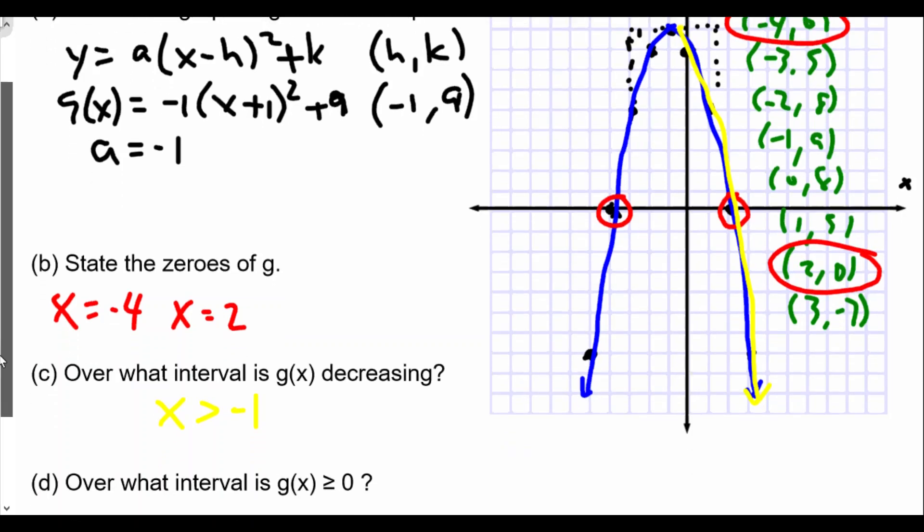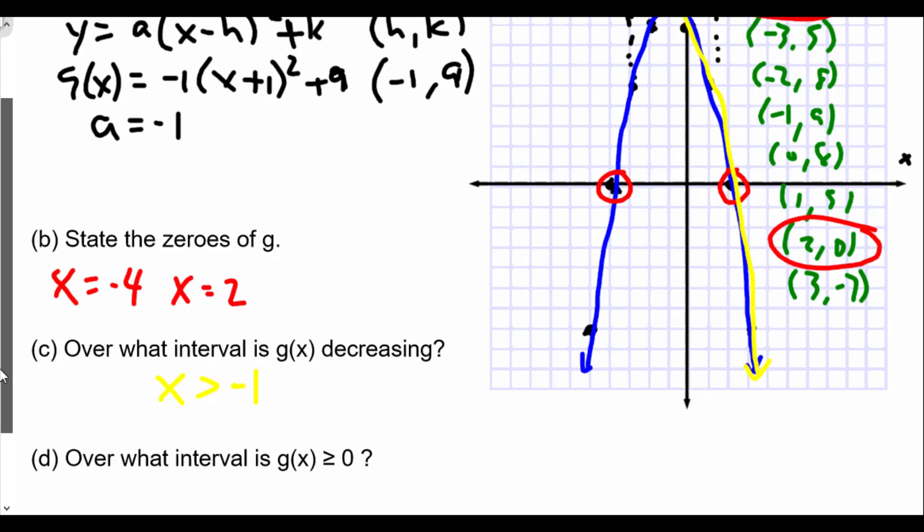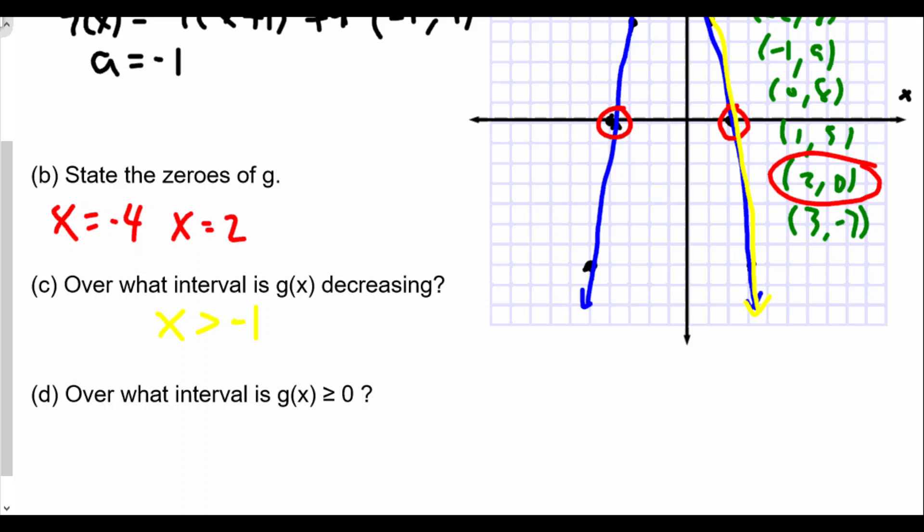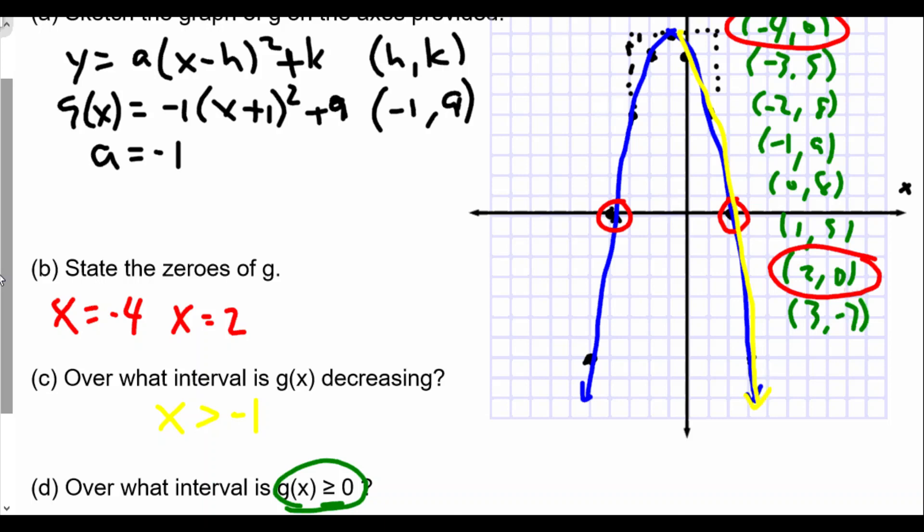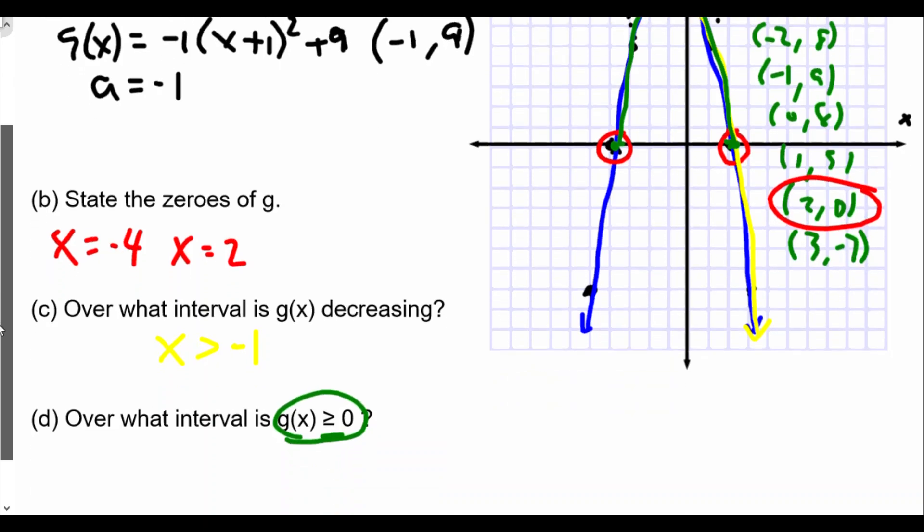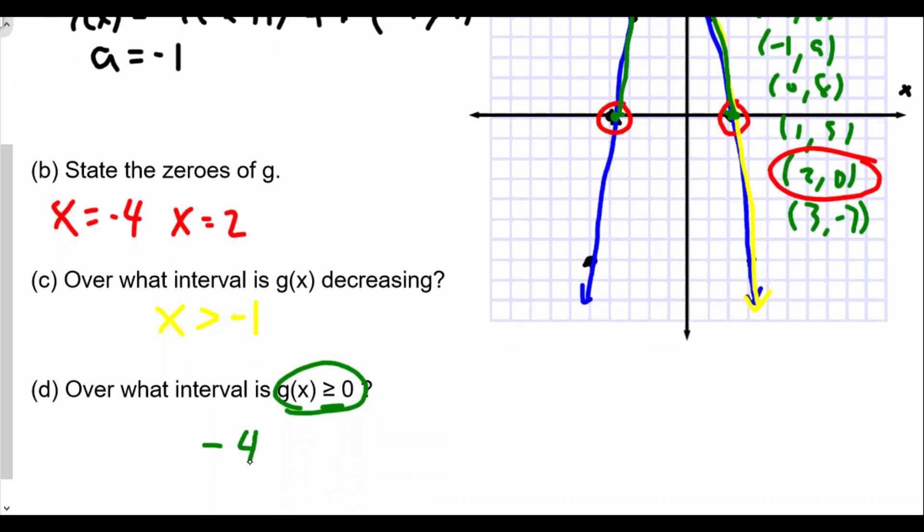There's part d: over what interval is g(x) ≥ 0? Very important, this part here - greater than or equal to zero. We will allow ourselves the part of the graph where it can equal zero. Where does that occur? y = 0 at the roots. So it would be this part of your graph, and we would include those points, the zeros. The answer for d would be the interval from -4 ≤ x ≤ 2. This would be the interval in which g(x) ≥ 0.